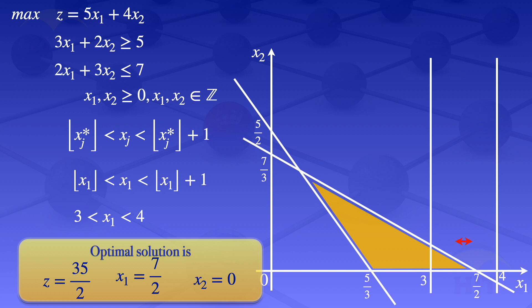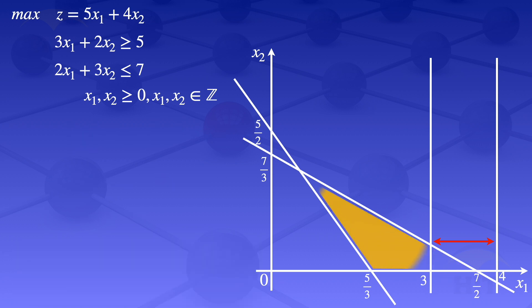We exclude the region between 3 and 4 from the shaded feasible region. When we do that, we get a new feasible region. We are excluding the region between 3 and 4, but we are not excluding the points lying on the line x1 equals 3.